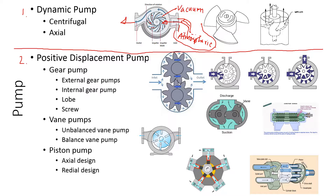This one is called a centrifugal pump because the flow is in the centrifugal direction. The axial pump works the same way, creating vacuum inside. The biggest difference between a dynamic pump and a positive displacement pump is that the dynamic pump works on creating vacuum pressure. Also, the impeller and the housing have a significant gap — it mainly creates vacuum inside and sucks liquid in, then pushes liquid out.